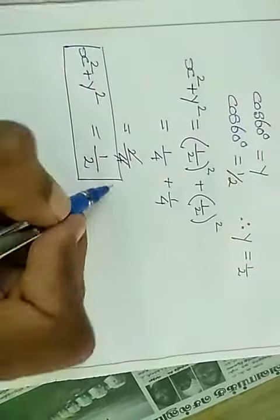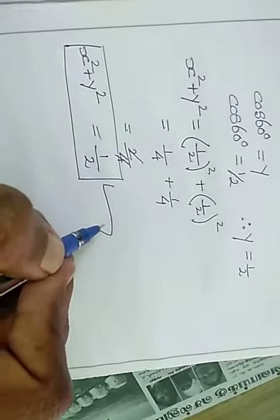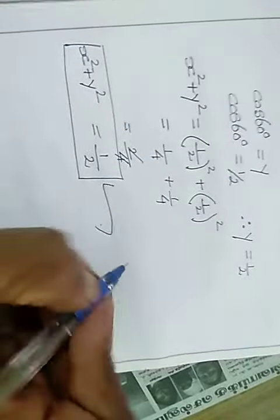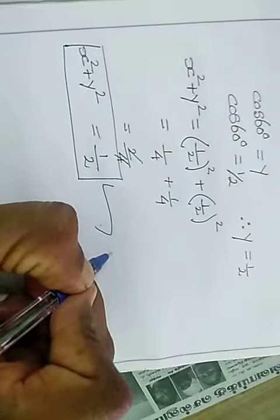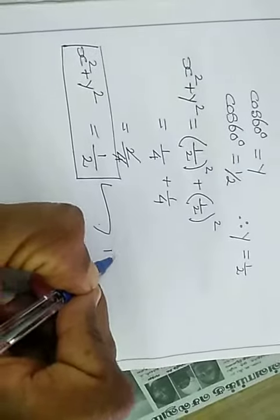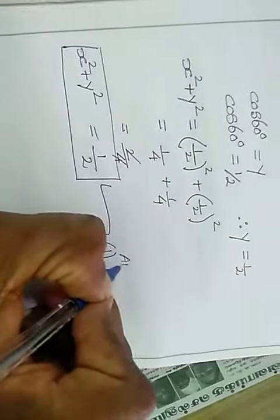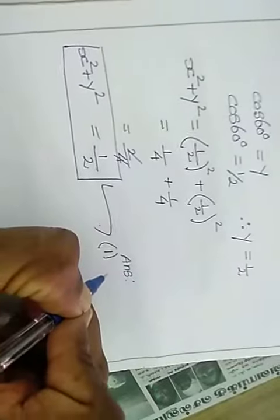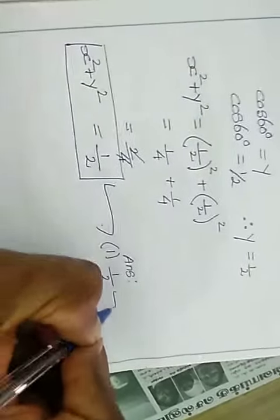So x square plus y square is equal to 1 by 2. That is the final answer. The answer is 1 by 2 — option subdivision 1 by 2. Thank you.